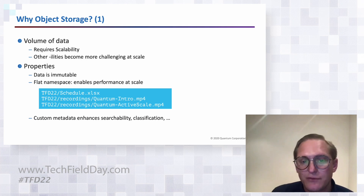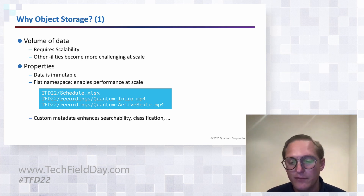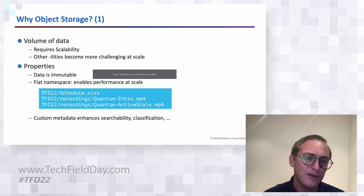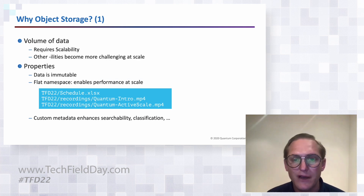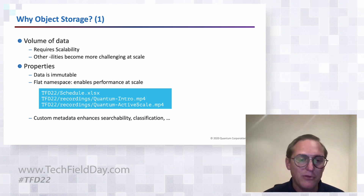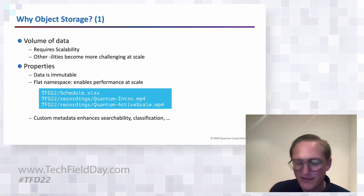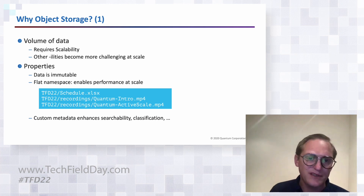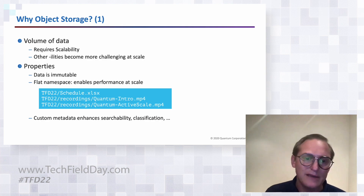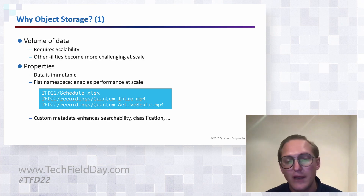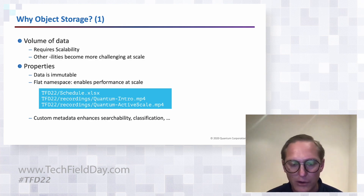The S3 API allows you to leverage prefixes to manage your system. For instance, in the bucket 'tech-field-day-22' you can say everything starting with 'recordings' should have a WORM guarantee of two years — you don't want the ability to delete these MP4s in the next few years. By using prefixes instead of a hierarchical directory structure, you organize data without the constraints of a hierarchical directory entry layout and inode layout.